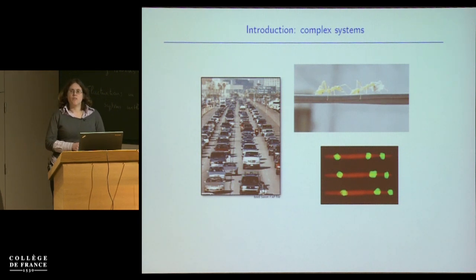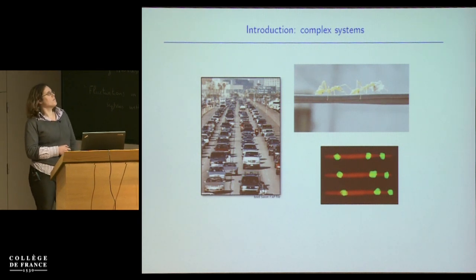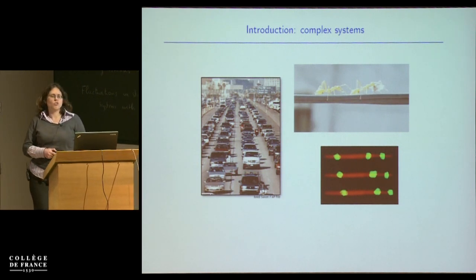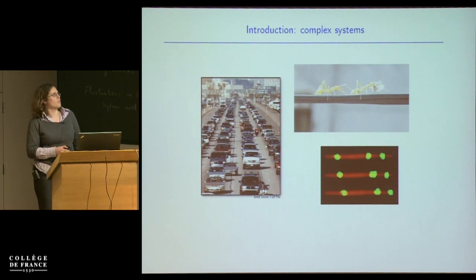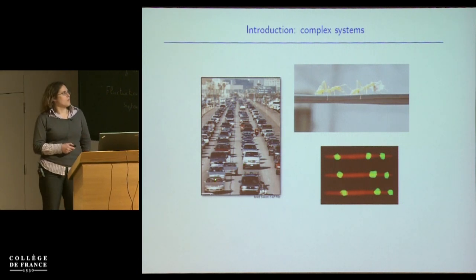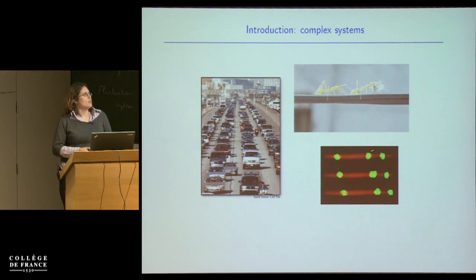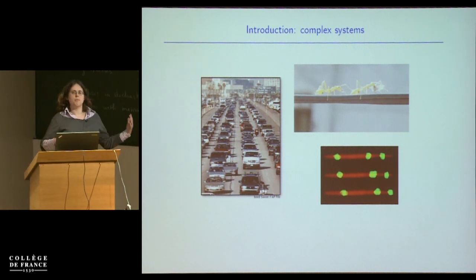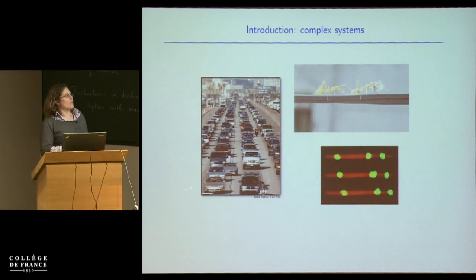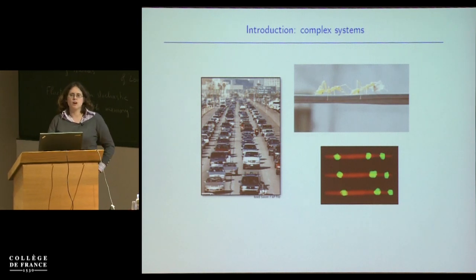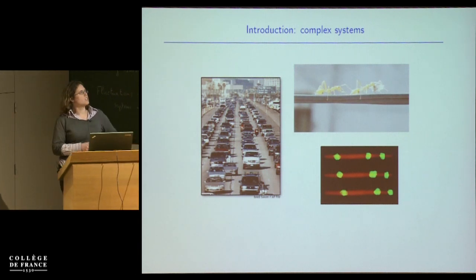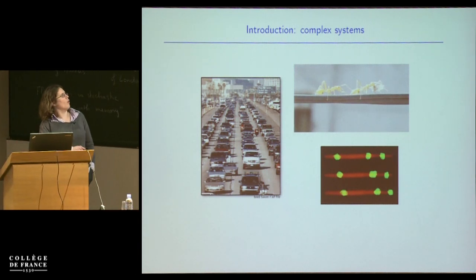All of these pictures have various things in common. In all of these cases we might know something about how the individual components behave — you might know the rules of the road or something about the psychology of an individual driver, or something about the chemistry governing the steps of an individual molecular motor. But typically what you want to know is what happens when you put them all together: do I have a traffic jam? What's the flow of stuff in my cell? That's the realm of statistical mechanics.